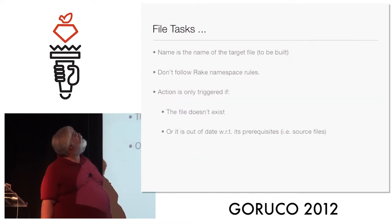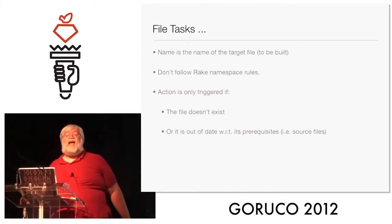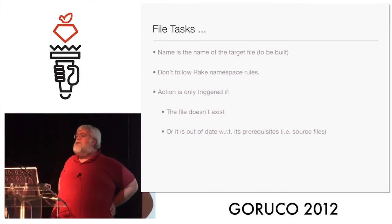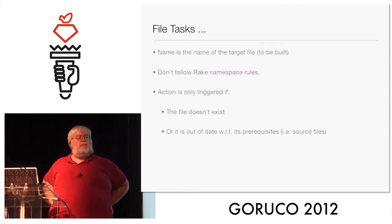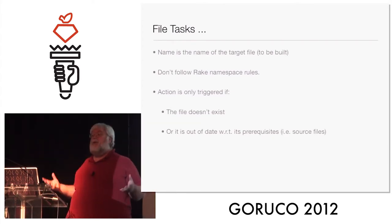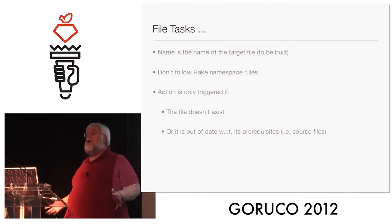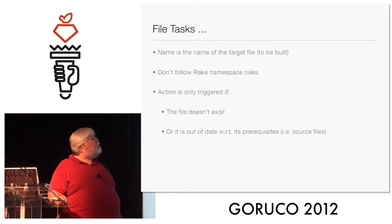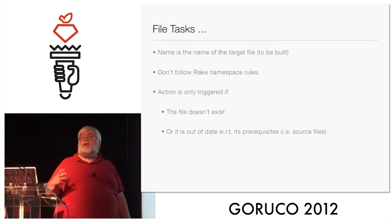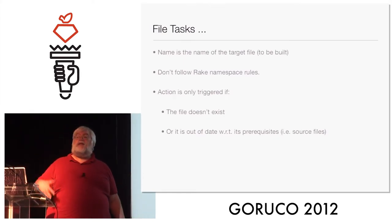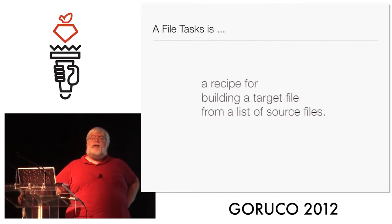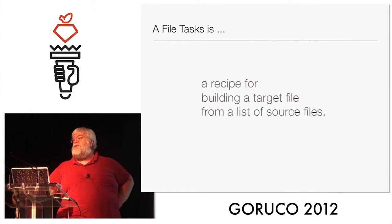We declare it to be a file task, not a regular task. We give it the name of the file we want to build — the target file — and a list of source files needed to build it. Inside the do block, we give it the command to run ImageMagick and convert those files, put in an `sh` command — that's Rake's way of saying 'just run the shell command for me.' File tasks do not obey namespaces — the purpose of a namespace in Rake is to separate tasks into different groups, but file tasks are tied to the files on your file system, so they totally ignore namespaces. A file action is only triggered if the file doesn't exist, or if its timestamp indicates its prerequisites are newer than it is. A file task is nothing more than a recipe for building a target file from a list of source files.